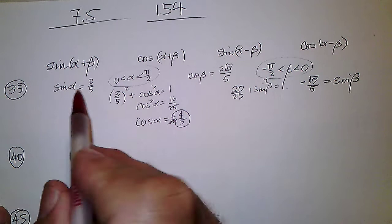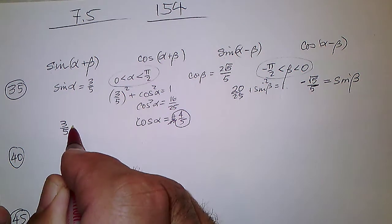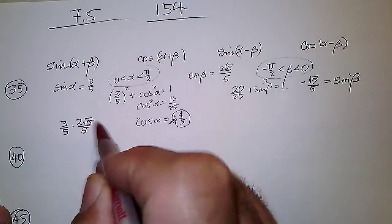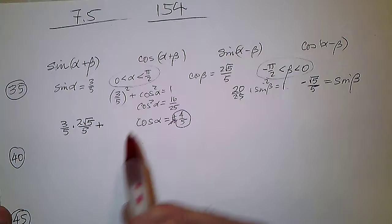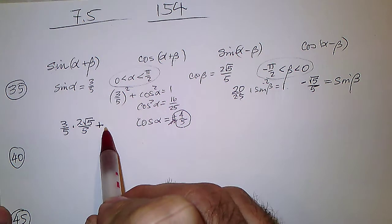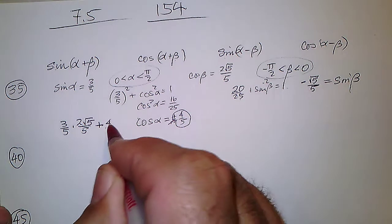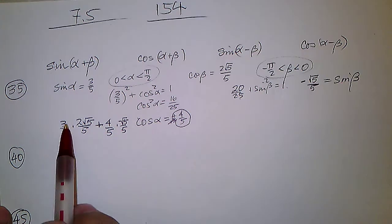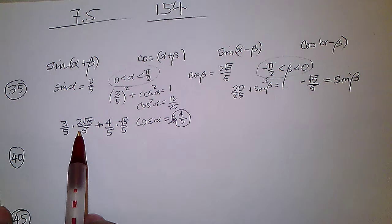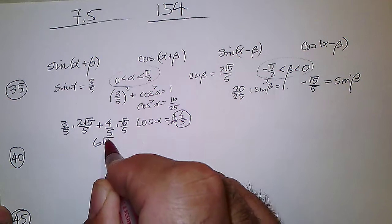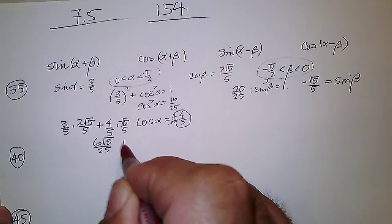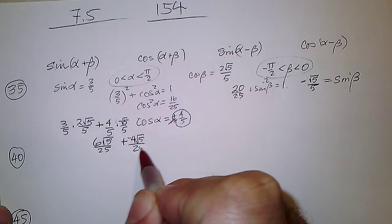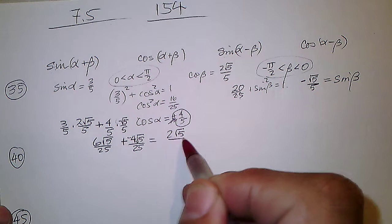Sine of alpha plus beta equals sine alpha times cosine beta, plus cosine alpha times sine beta. That's 3/5 times 2√5/5, plus 4/5 times negative √5/5. We get 6√5 over 25 minus 4√5 over 25, which leaves 2√5 over 25.